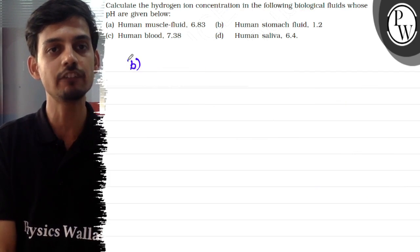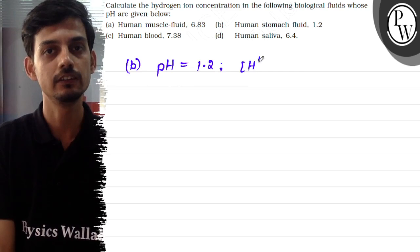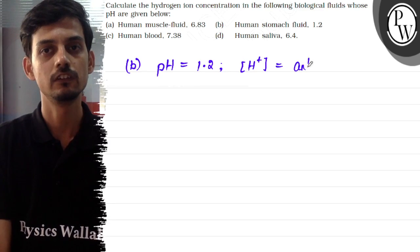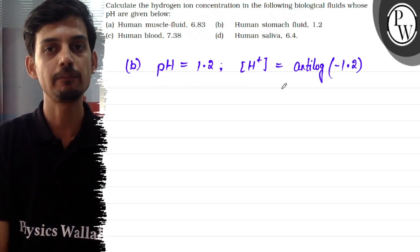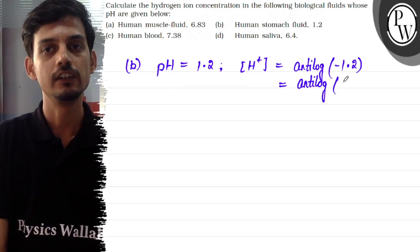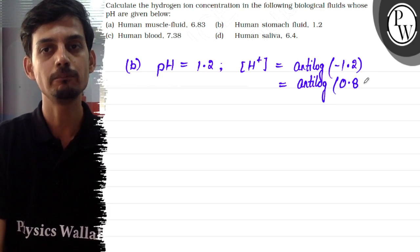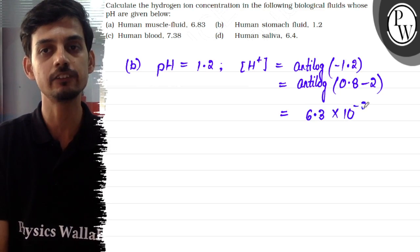For part B, human stomach fluid, pH is given as 1.2. So the concentration of H⁺ ions will be antilog of minus 1.2, which becomes antilog of (0.8 minus 2). The antilog of 0.8 is 6.3, and minus 2 gives 10 to the power minus 2. So the answer is 6.3 × 10⁻² moles per liter.